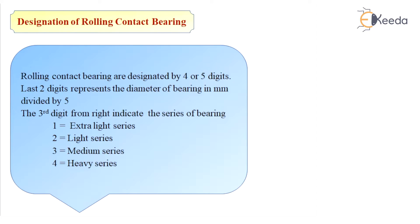For a given shaft diameter, the dimensions of the balls and races are smaller in the light series — the load capacities and cost are also less. For the same shaft diameter, the dynamic load carrying capacity of the heavy series is more, and so is the cost. The trial and error selection method begins with the light series; if not suitable, a medium series bearing is selected. The last choice is the costliest heavy series.